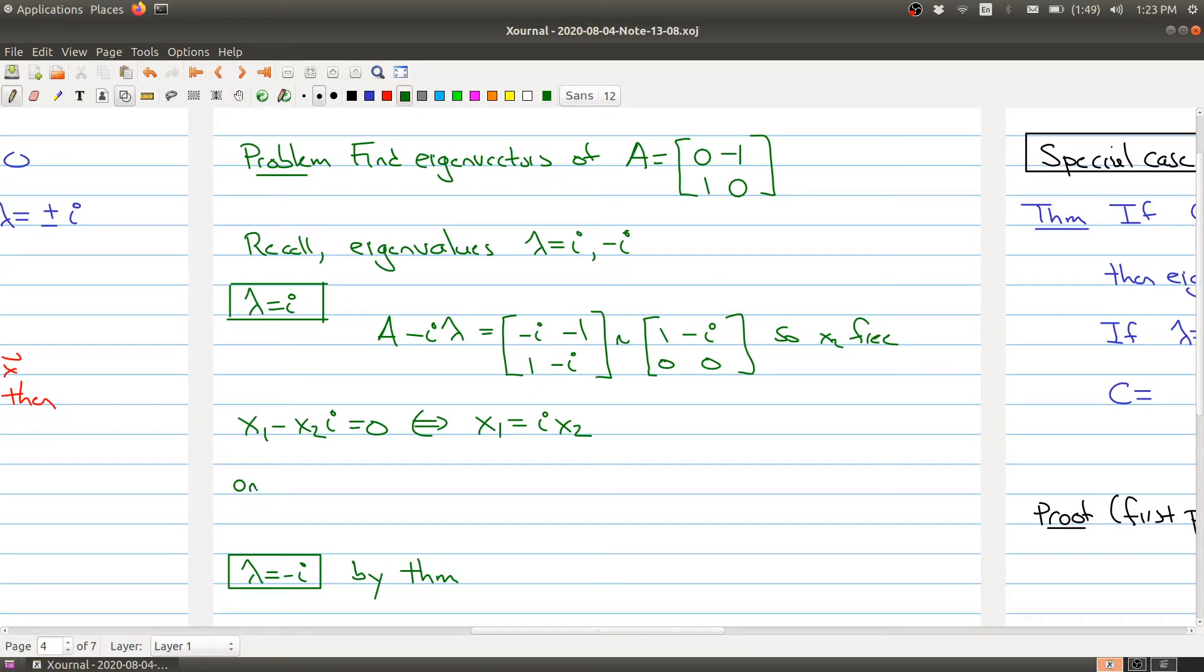So doing our usual trick here, we have that one eigenvector is going to be v equaling [ix2, x2]. We can factor out x2, and we get [i, 1].